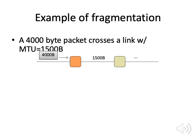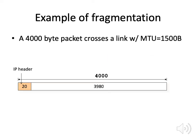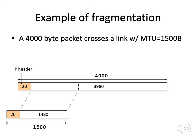Let's look at an example. Suppose we have a 4,000 byte packet that crosses a link with an MTU of 1,500 bytes. When the packet comes in, it's going to be 4,000 bytes and at some point it has to be fragmented into packets that are less than 1,500 bytes. The original packet has a 20-byte IP header and a 3,980-byte payload. When fragmented, we can make a 1,500-byte packet with a 20-byte header and a 1,480-byte payload.